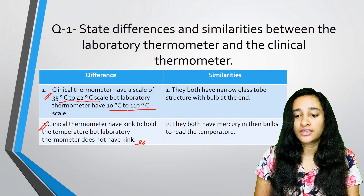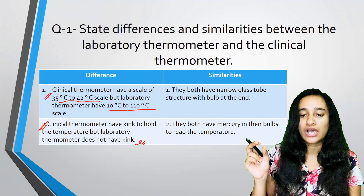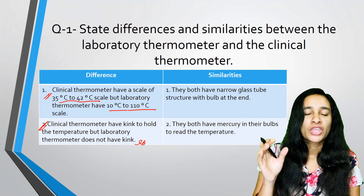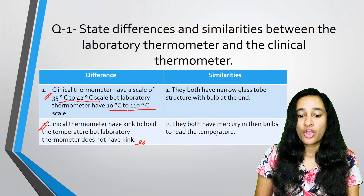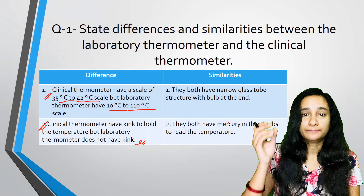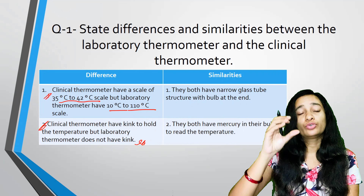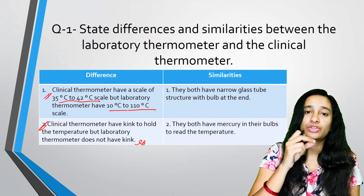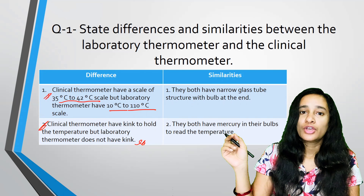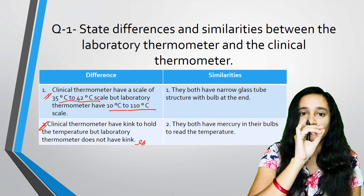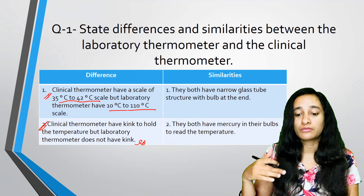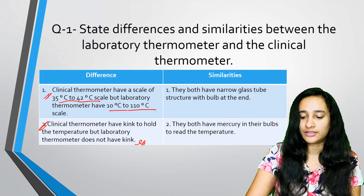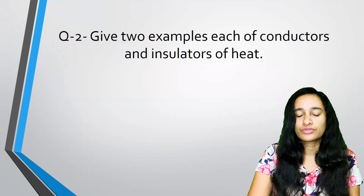What are the similarities? They both have a narrow glass tube structure with a bulb at the end. They both have mercury in their bulbs to read the temperature. So, they both have these similarities.